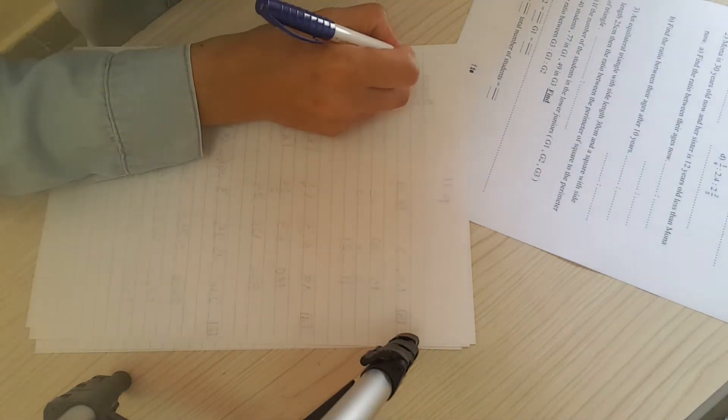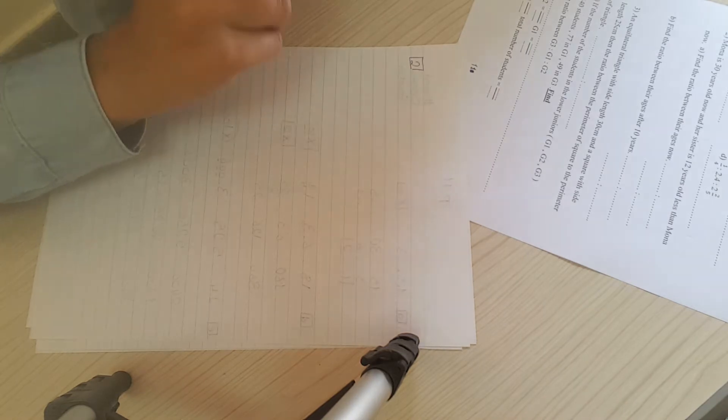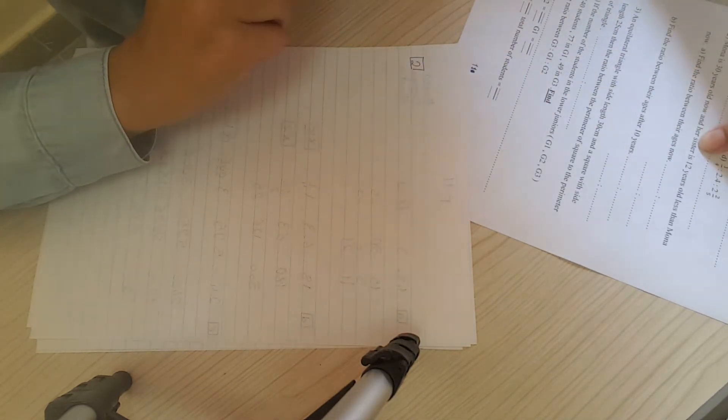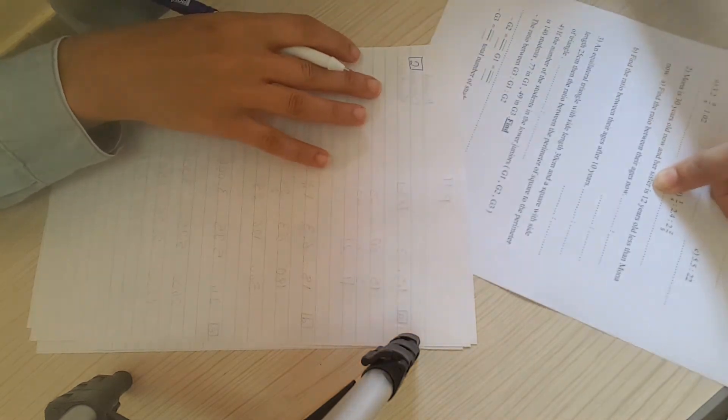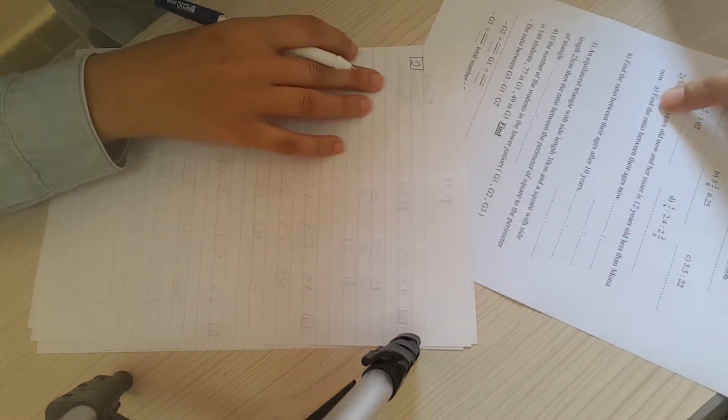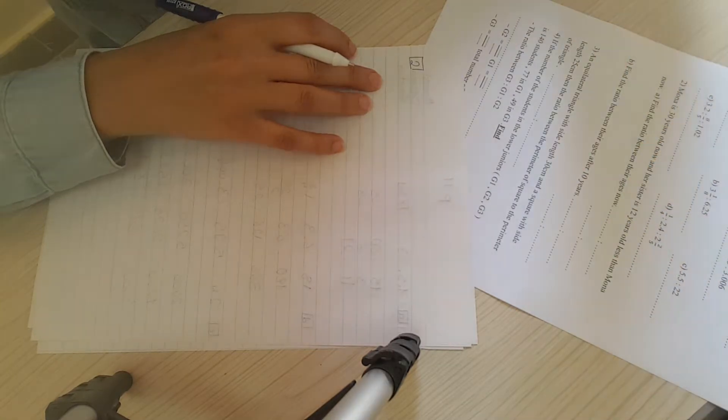Now we will solve question 2 on page 11. Mona is 30 years old now and her sister is 12 years less than Mona. Find the ratio between their ages now.